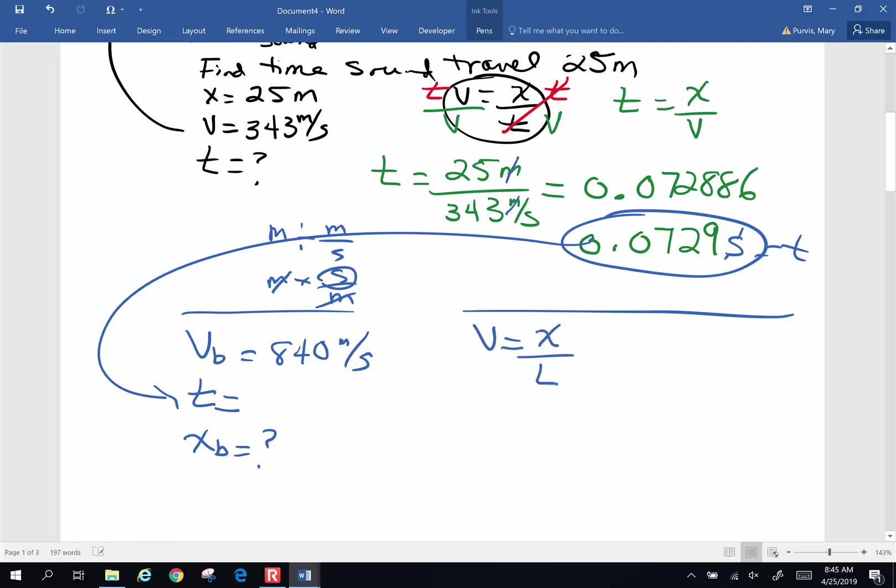So same equation. Velocity is displacement over time. Sound and bullets in the horizontal plane are going to travel at a constant velocity. Do a little algebra. Solve for x. So to get x alone, multiply both sides by t. They're going to cancel. X is v t, velocity of the bullet, 840 meters per second.